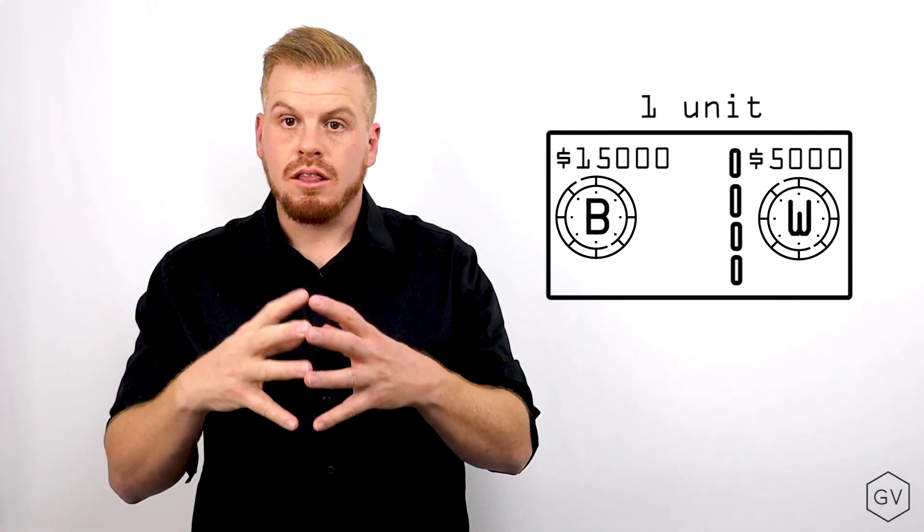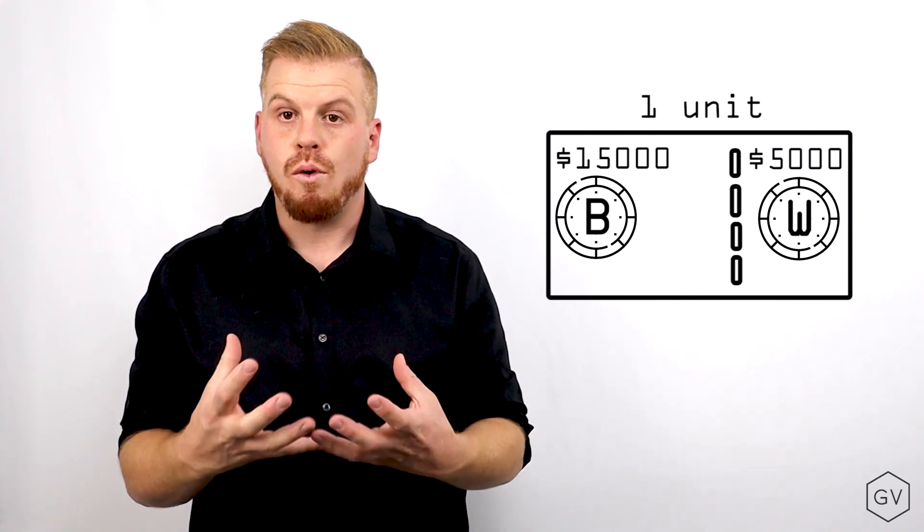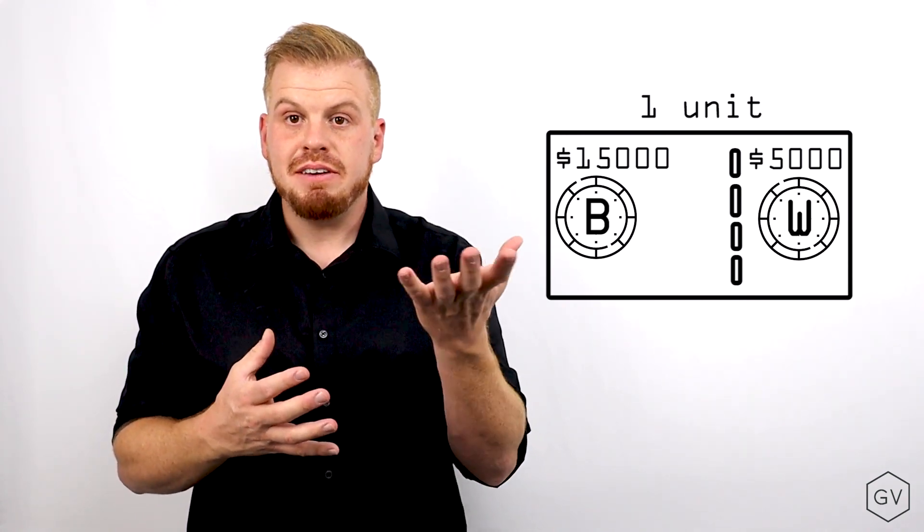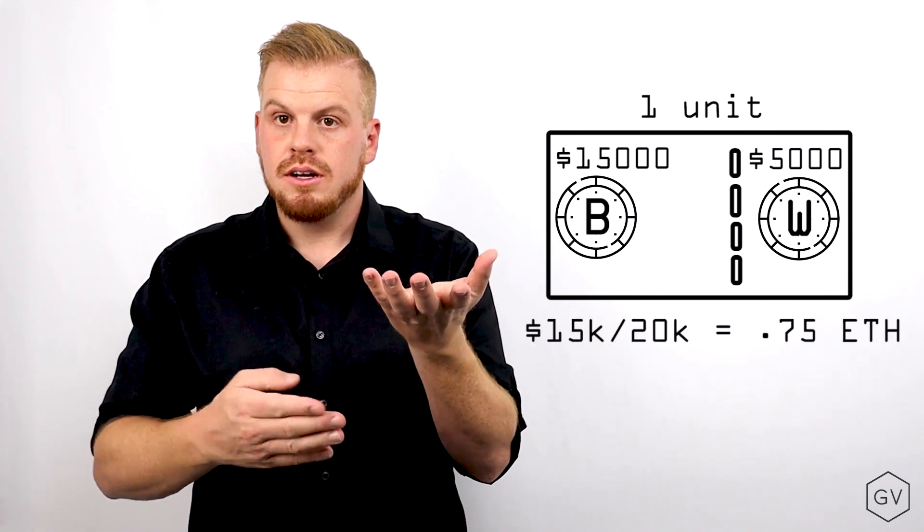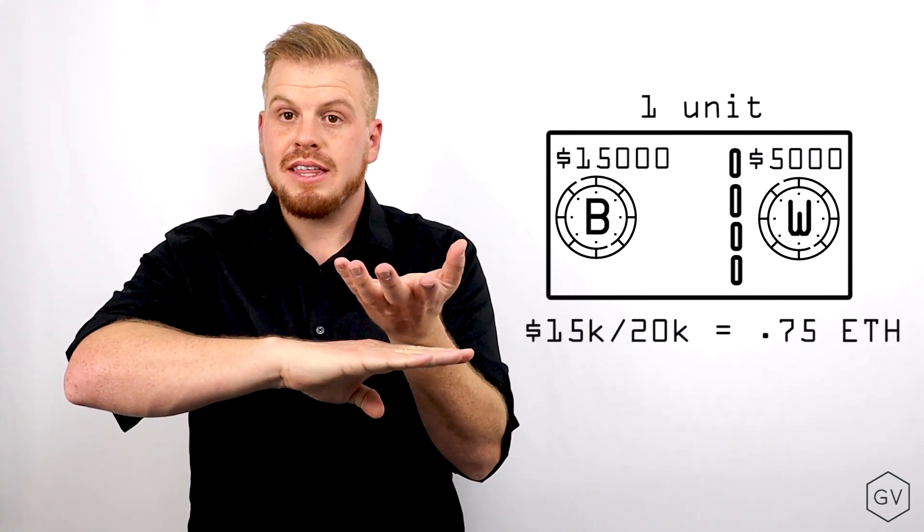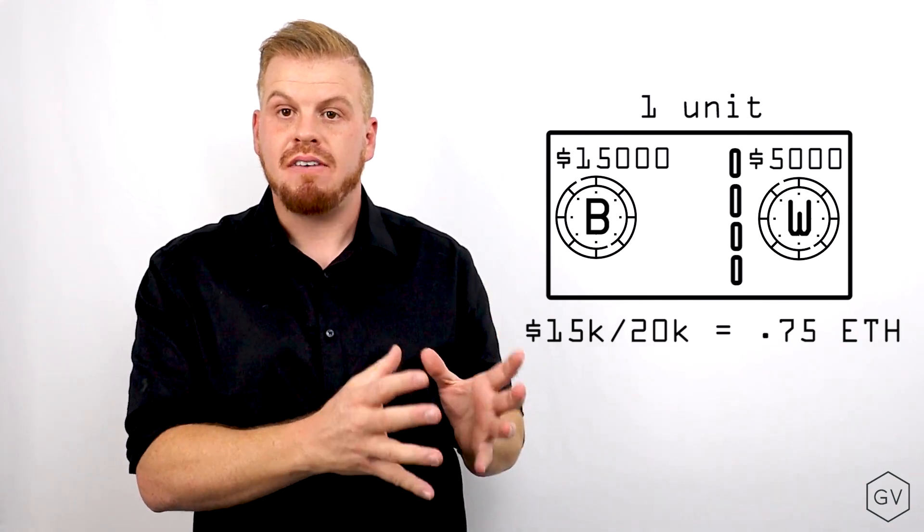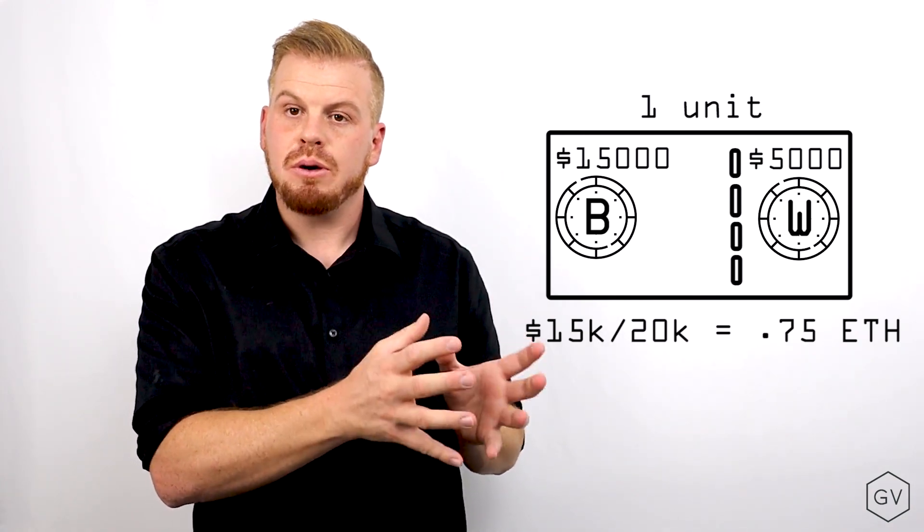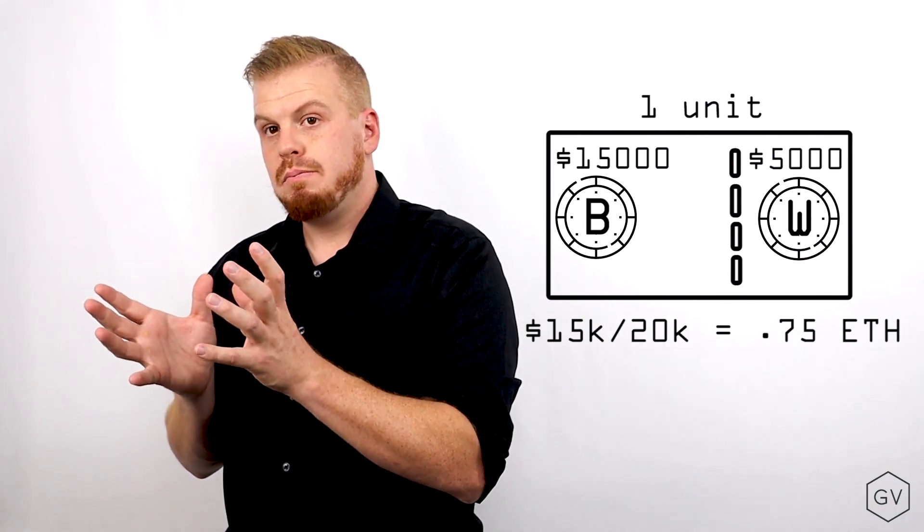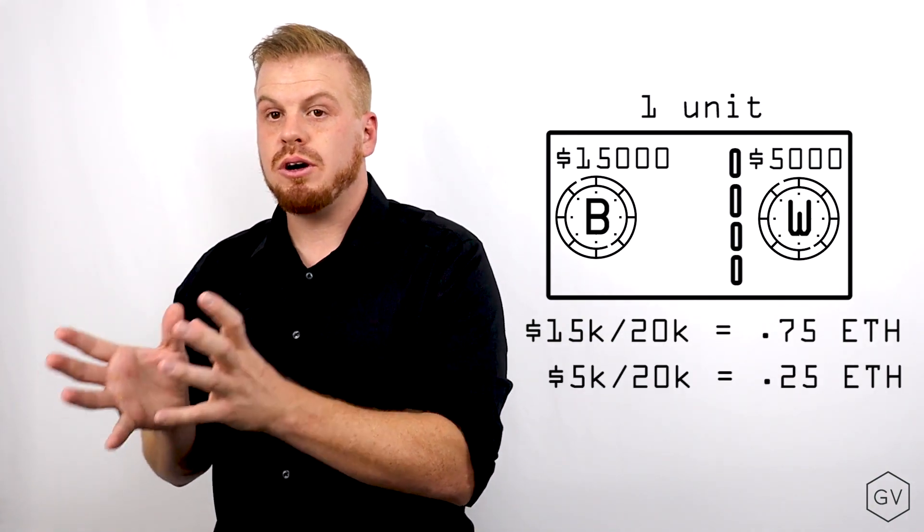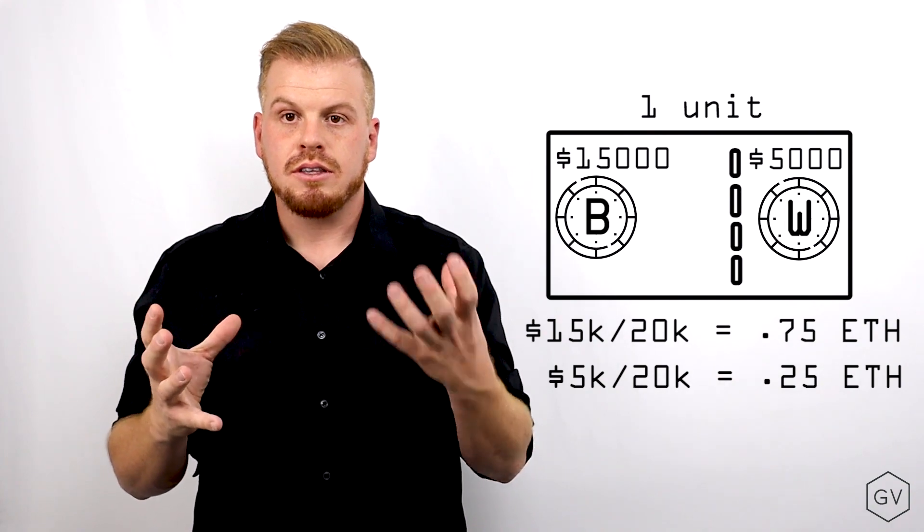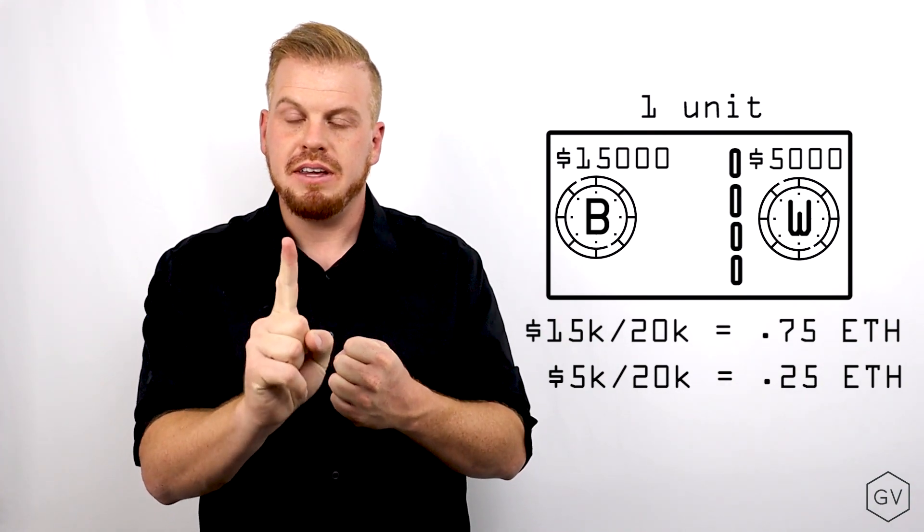The ETH $5,000 call therefore has $15,000 of profit on a $20,000 asset. There is one unit of ETH locked up in the settlement layer for this contract, which means that $15,000 of value divided by $20,000 asset equals 0.75 ETH of B token value, which leaves 0.25 W token value.